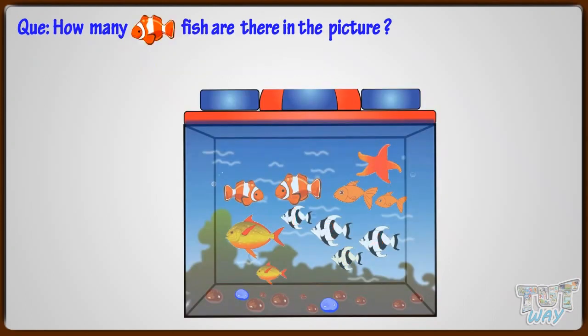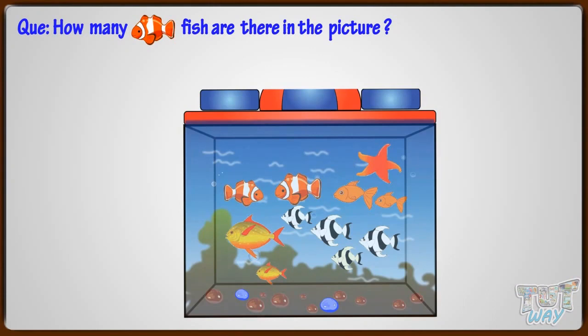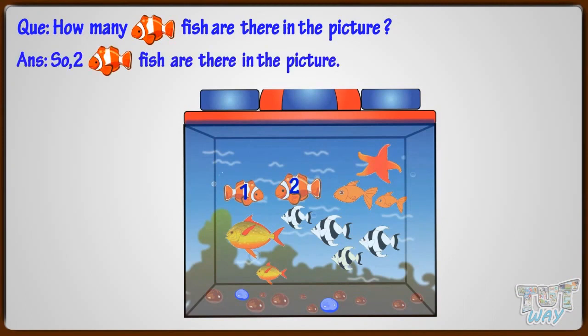How many orange and white color fish are there in the picture? Let's count. One, two. So two orange and white fish are there in the picture.